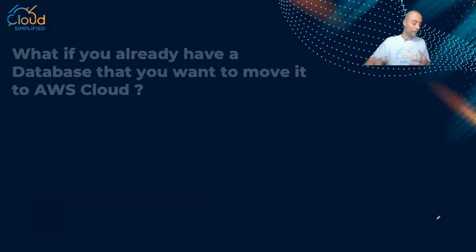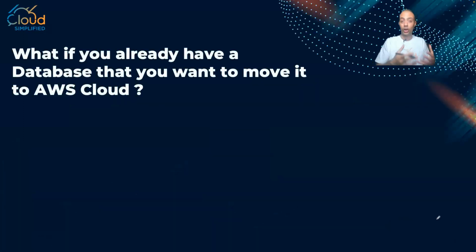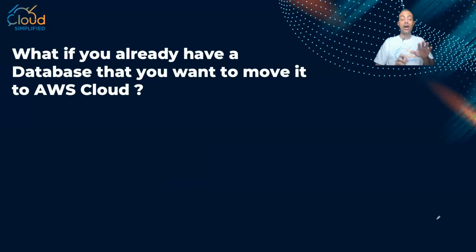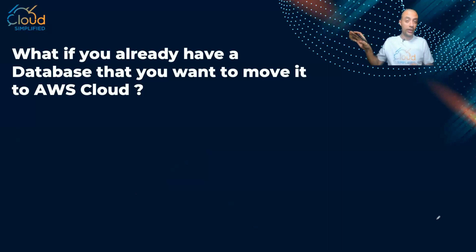Maybe you have this question: what if you already have a database on-premise that is up and running and you want to migrate it to AWS cloud? The challenge with migrating databases is downtime, because usually you take a snapshot, then close and turn off the database so you don't miss any transactions, and then replicate it on the other side — which results in lots of downtime. So the question is: how can I migrate my database with the minimal possible amount of downtime?